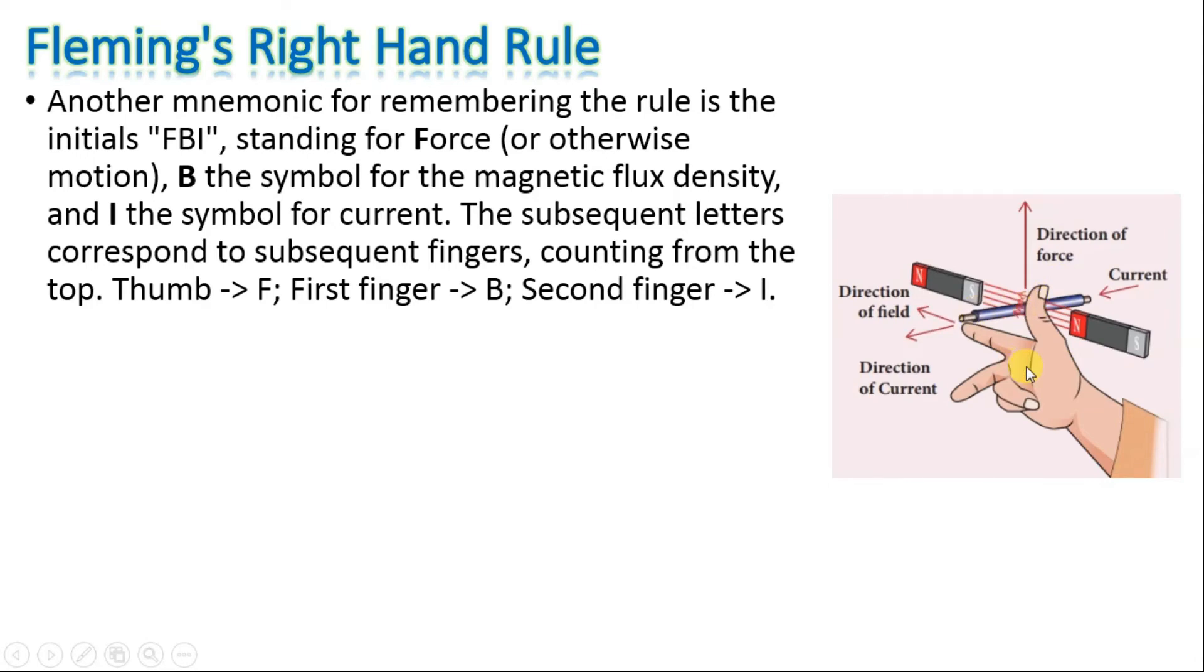B is the symbol for magnetic flux density, so you can use B for field. And I is the symbol for current. So FBI: force or motion, field or magnetic flux density, and I for current.